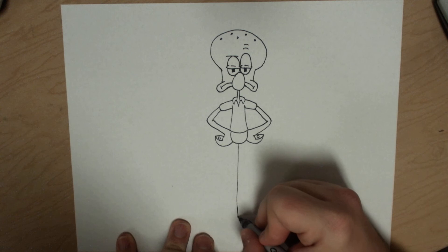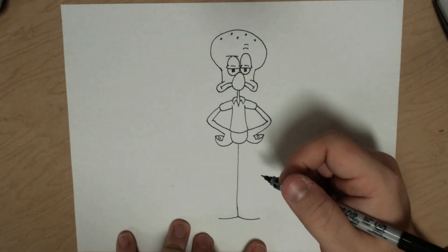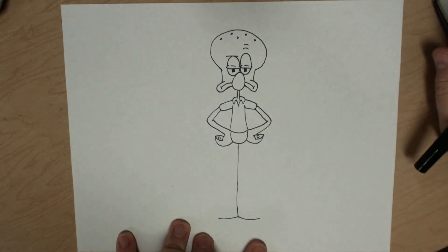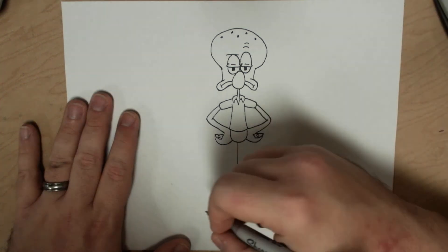Do his sleeves. Looks like little rectangles that come back in, little curved rectangles. Bring those lines up just a little bit, that part.